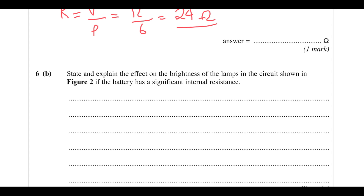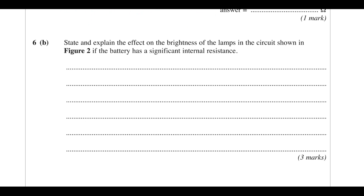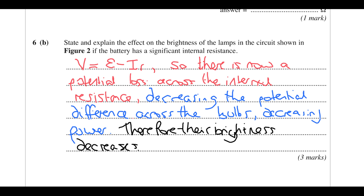Explain the effect on brightness if the battery has significant internal resistance. Using the terminal voltage: the voltage across the bulbs equals EMF minus the voltage drop across the internal resistance. So the terminal voltage across the lamps is now smaller — there's a potential difference loss across the internal resistance — and therefore the power and brightness decrease.